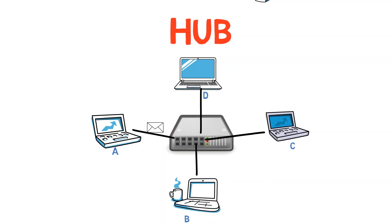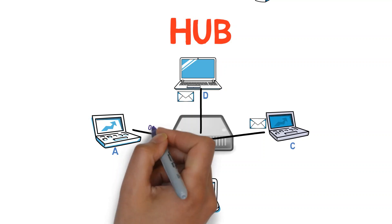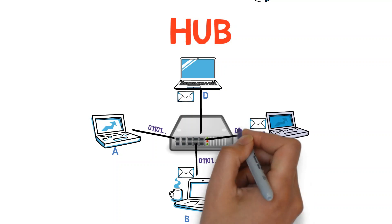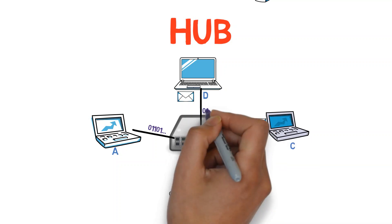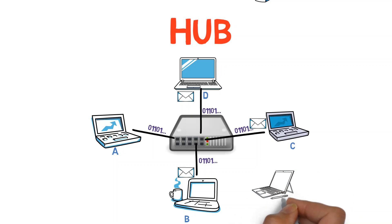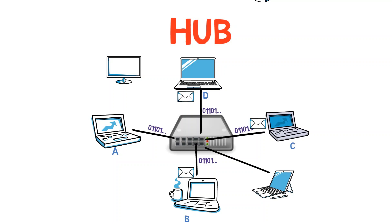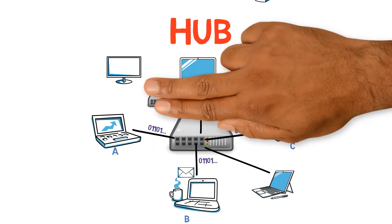For example, if A sends a frame to B, the hub will send this frame to B, C and D — all ports except A's port. The hub doesn't understand Ethernet and doesn't know anything about MAC addresses. For the hub, all bits are just bits transmitted over the wire, and these bits should get to all other ends. If we need to add a new computer to the network, we simply connect it to the hub. What happens if the hub runs out of ports? No problem, we'll connect it to another hub.